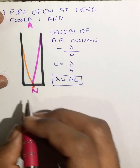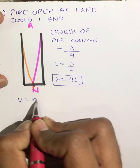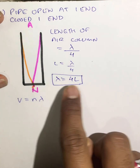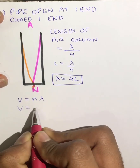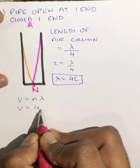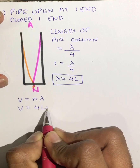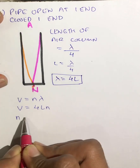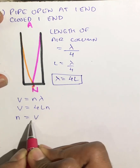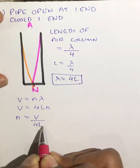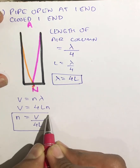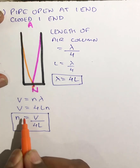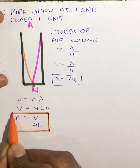We know the formula for velocity is v = n × λ. Substituting the value of lambda, we get v = n × 4L. From this, we get the value of n, which equals v upon 4L. This is the frequency for the first condition — the first possible mode of vibration.